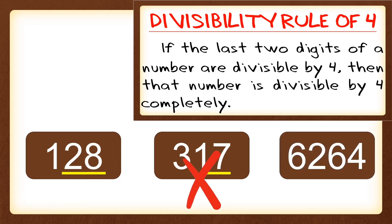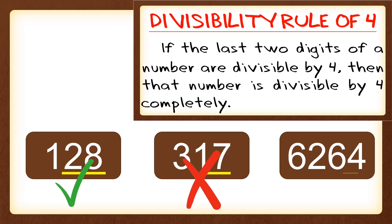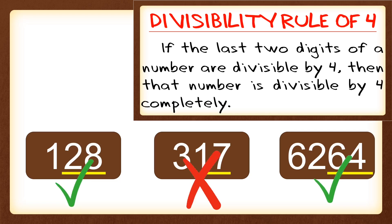The last example is 6264. We're going to look at the last two digits, which are 64. We check whether 64 is a multiple of 4 or divisible by 4. Can you guess? Yes — 64 is divisible by 4, so 6264 is also divisible by 4.